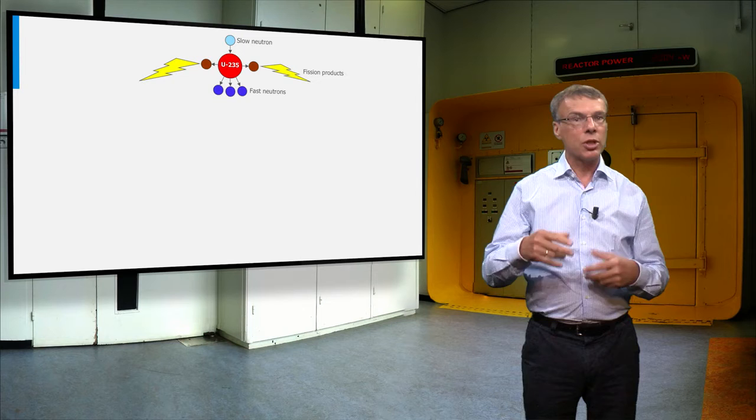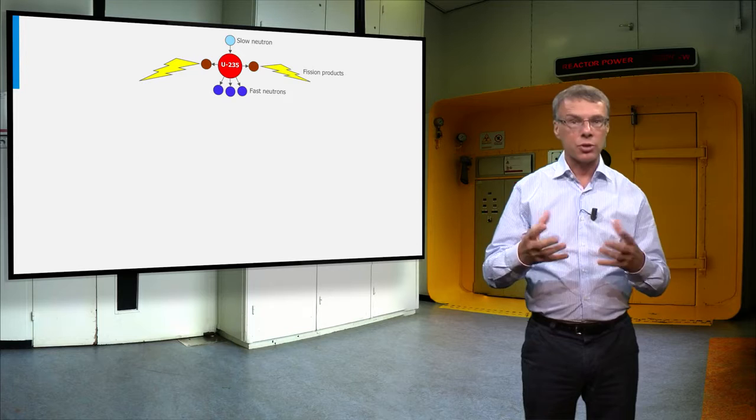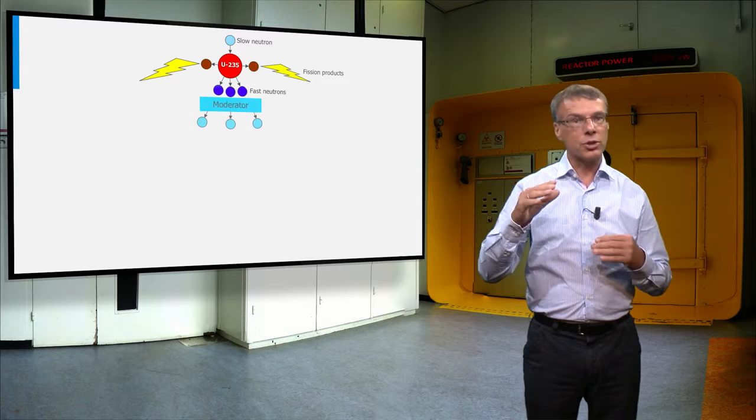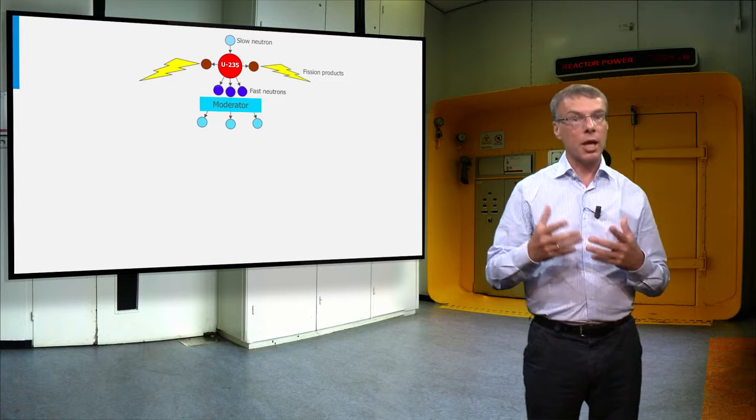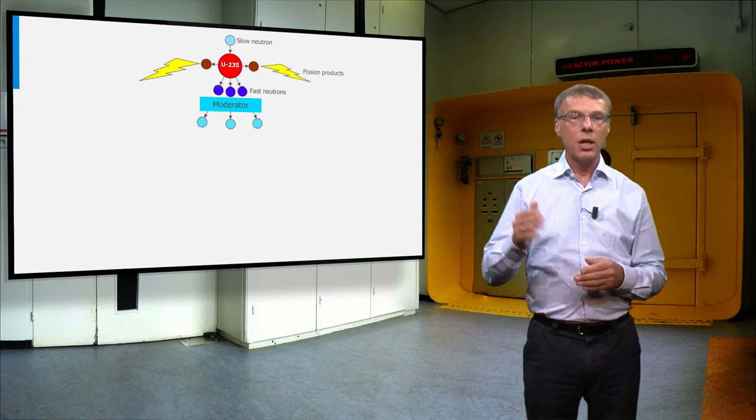On average 2.5 fission neutrons are produced. The probability for a fast neutron to be absorbed by another uranium atom is very small, and therefore we have to try to slow down the neutrons by letting them collide with light nuclei, like hydrogen or carbon, a process which is called moderation.